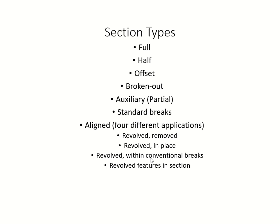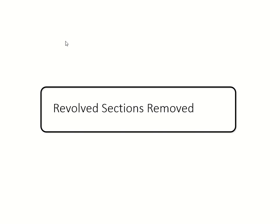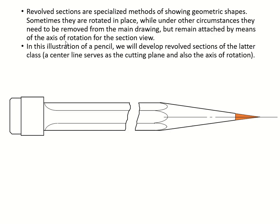We did a little overview right after cross hatching with longitudinal sections, but the conventional method for cross hatching is completely linked to the aligned section. Now let's go back to revolve sections. Revolve sections deal with specialized methods for showing geometric shapes. Sometimes you can see 'revolve' meaning we're turning it around or rotating it so we can show the geometric shapes of the model.